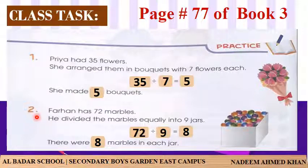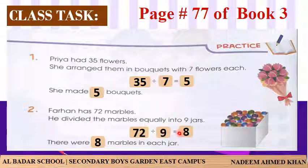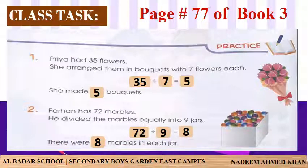Question number 2: فرہان کے پاس 72 marbles ہیں، اس نے marbles کو 9 jars میں برابر تقسیم کیا۔ blank میں total marbles 72 لکھیں، پھر divided by 9۔ 9 کے table میں 72 کتنے time آتا ہے؟ 9×8=72، تو blank میں 8 لگائیں۔ There were 8 marbles in each jar — یہ ہمارا answer ہے۔